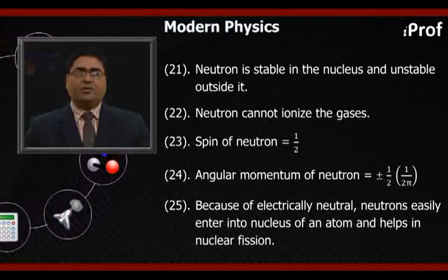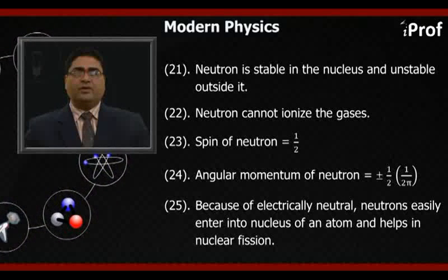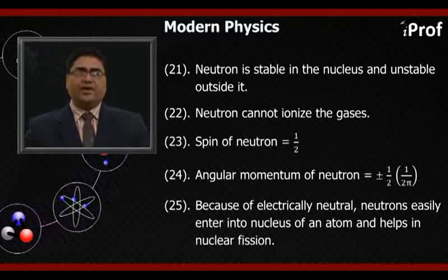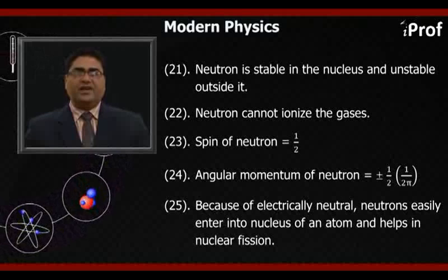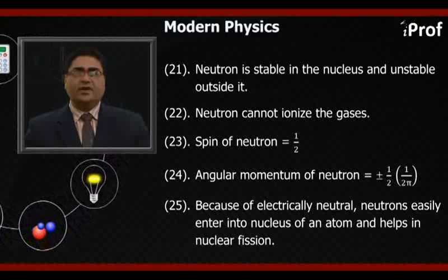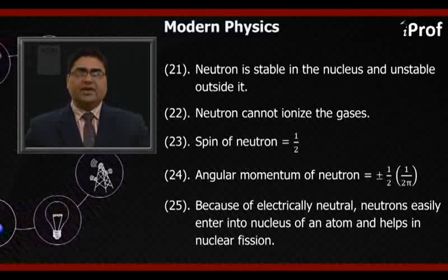Twenty-third, spin of neutron equals ±1/2. Twenty-fourth, angular momentum of neutron equals ±(1/2)(h/2π). Twenty-fifth, because of electrically neutral, neutrons easily enter into nucleus of an atom and helps in nuclear fission.